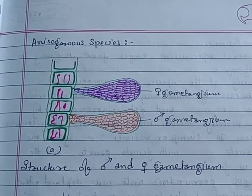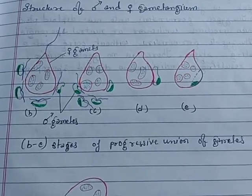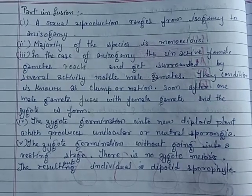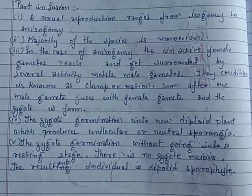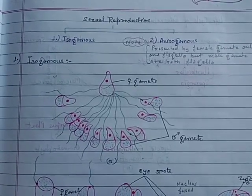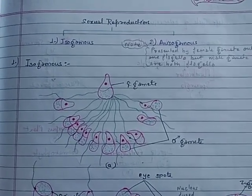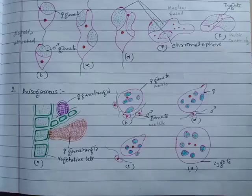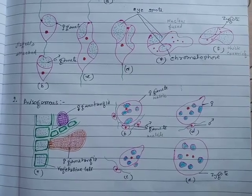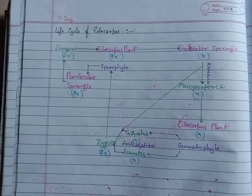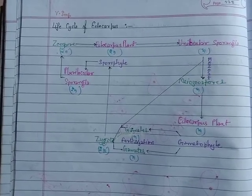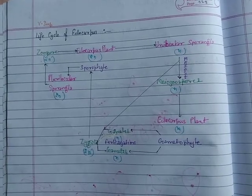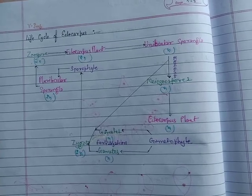Structure of male and female gametangium. Stage of progressive union of gametes. Structure of isogametes. Thank you.